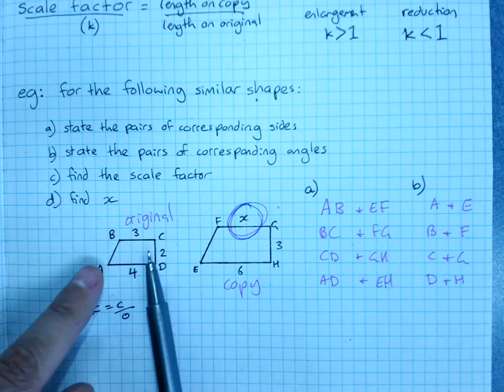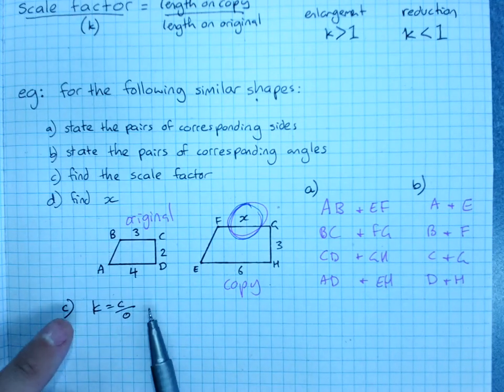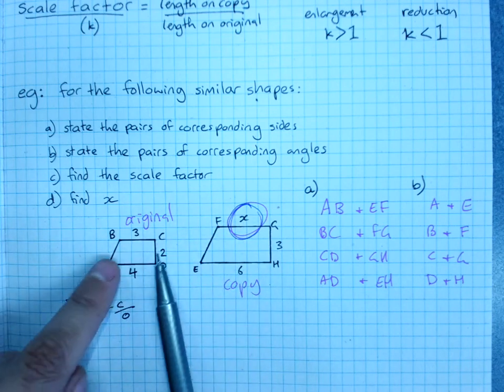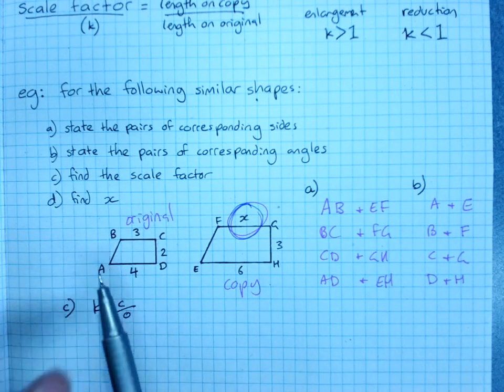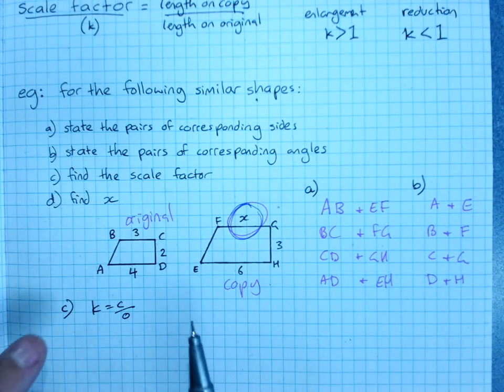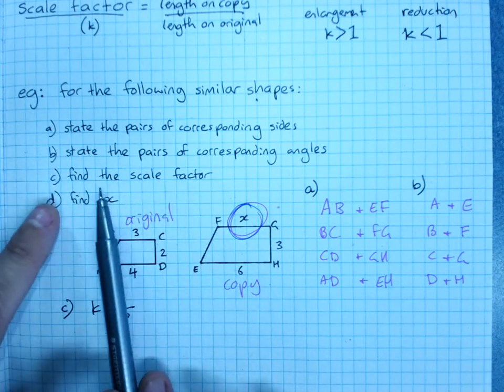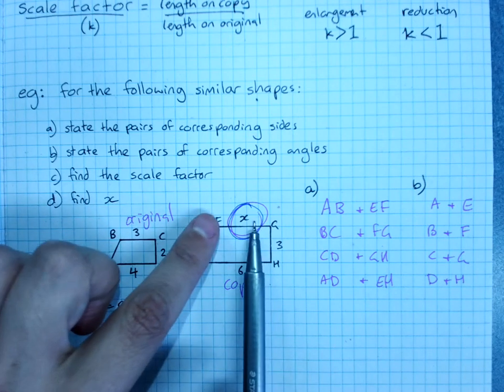If we had an X here and a Y over here, then we'd have to find two different scale factors, one where this was the copy to find the X, one where this was the copy to find the Y. But, we need the scale factor, and we stop and check, what am I finding? I'm going to be finding X. This one's the copy.